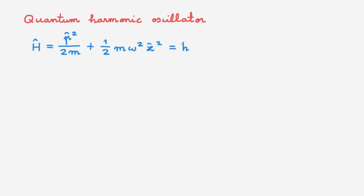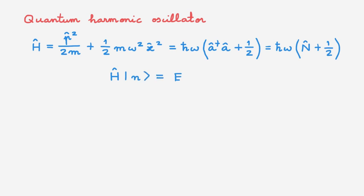We can also write down this Hamiltonian in terms of ladder operators, or in terms of the number operator. We can also write the eigenvalue equation of the Hamiltonian of the quantum harmonic oscillator, where these are the eigenvalues and these are the eigenstates.